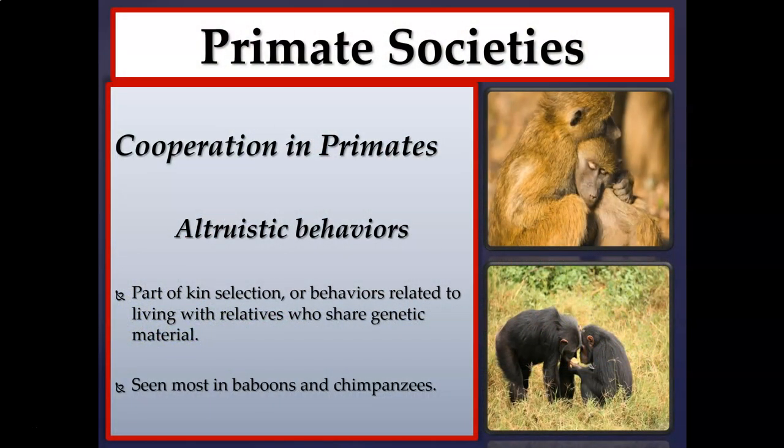Altruistic behaviors are believed to be part of kin selection. Kin selection refers to behaviors related to living with relatives who share genetic material — think of 'kin' as family. You see a lot of kin selection in baboons, chimpanzees, and of course humans.